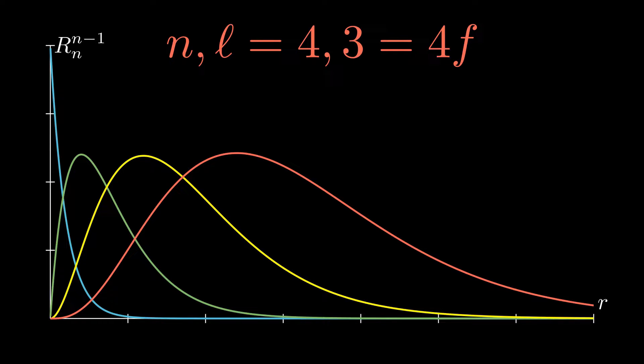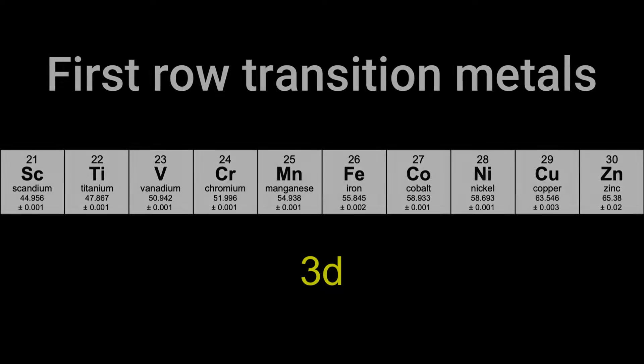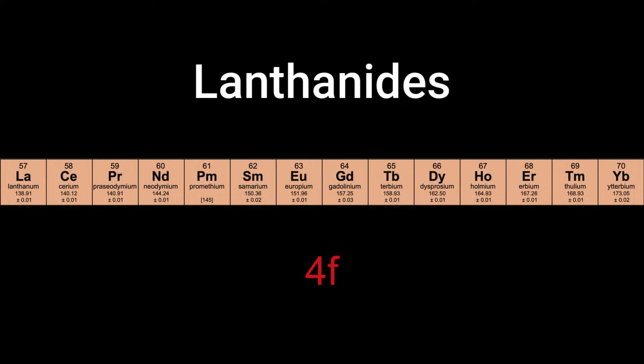For chemists among you, you may recognize these as the radial part of 1s, 2p, 3d and 4f orbitals. Understanding the property and reactivity of first row transition metals starts with the understanding of the behavior of 3d orbitals and the behavior of 4f orbitals underpins lanthanide chemistry.